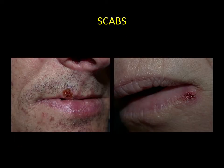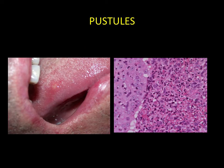Scabs. These correspond to ulcerations which have dried out. They are found outside the oral cavity, mainly on the vermilion border of the lips. Pustules are extremely rare lesions, characterised by the presence of pus in the mucosa. These pustules impart a slightly yellowish colouration to the mucosa.